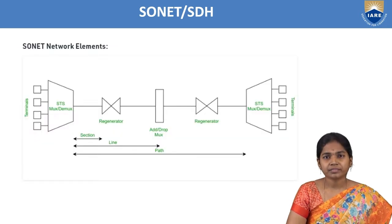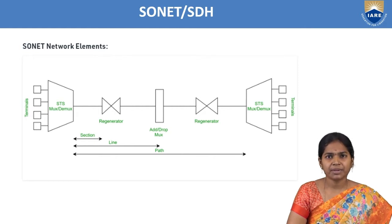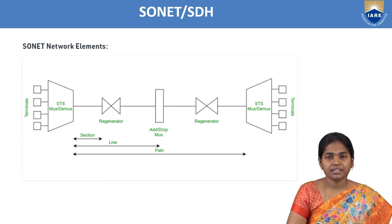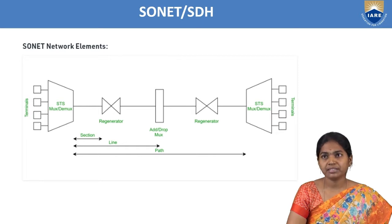The SONET network structure has several elements: STS multiplexer or demultiplexer, regenerator, add drop multiplexer, and terminal. These are the key network elements in the SONET architecture.